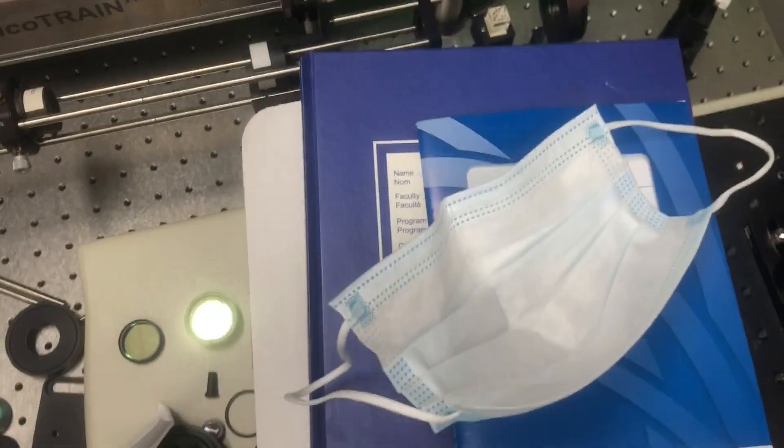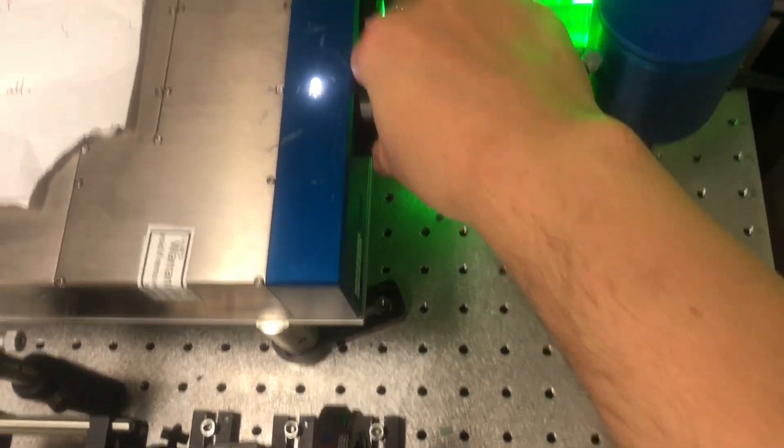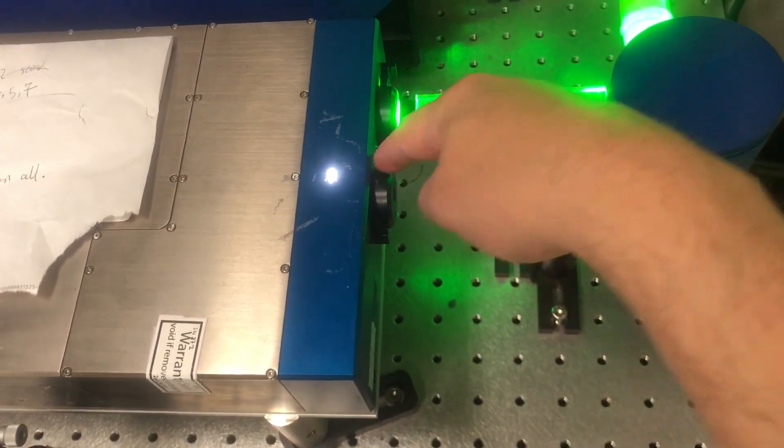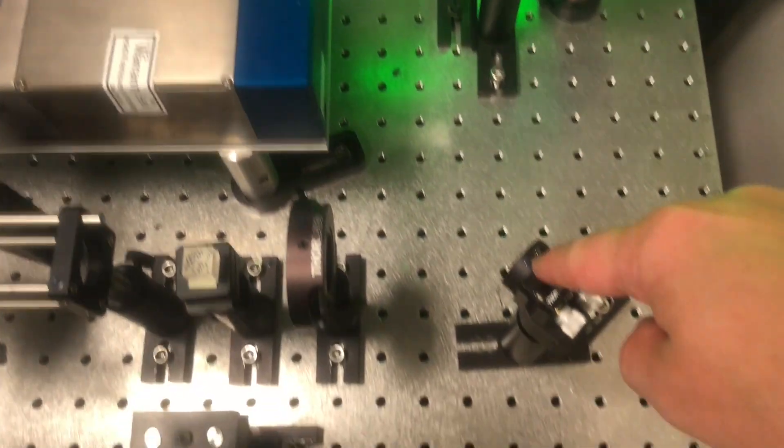On the other hand, the 1064 nanometer beam comes out here. It is invisible. It hits the first mirror, then the second mirror.